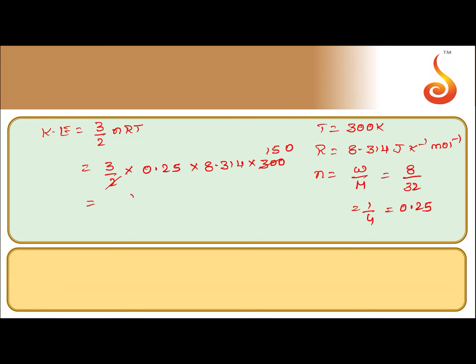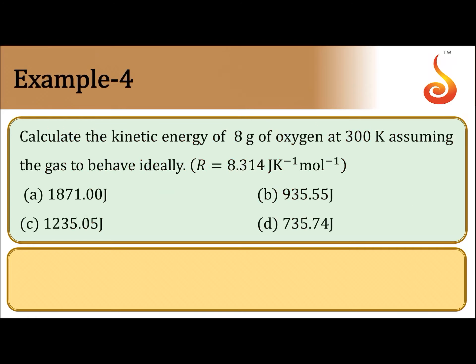935.55. What you are calculating is kinetic energy and all the values you are taking in SI units. So what is the SI unit of energy? Joules. So your answer should be 935.55 joules. Let us see, so your answer is option B. Option B should be your answer.